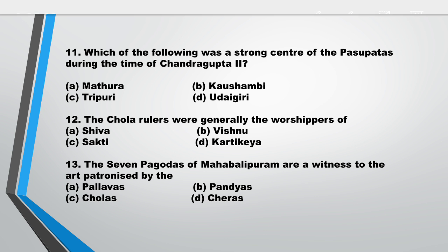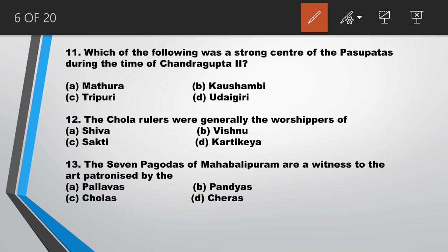Question number 11: which of the following was a strong center of Buddhist protest during the time of Chandragupta II? Answer is A, Mathura. Question number 12: the Chola rulers were generally worshippers of answer A, Shiva. Question number 13: the seven pagodas of Mahabalipuram are a witness to the art patronized by answer A, the Pallavas.